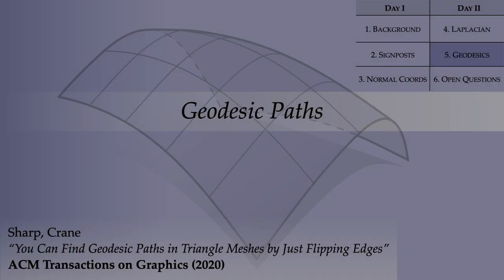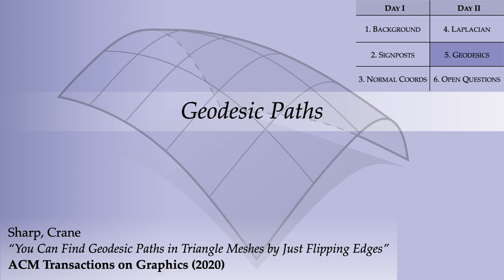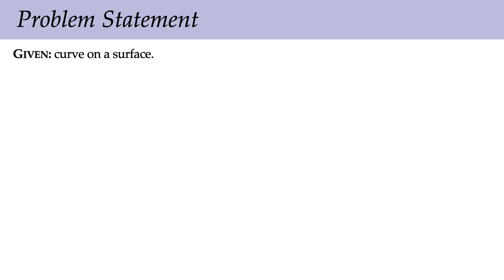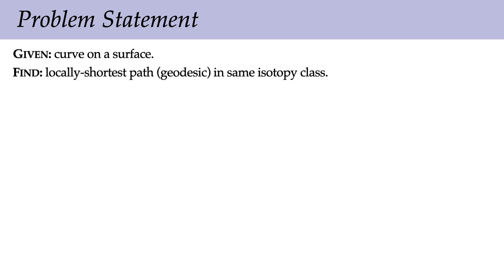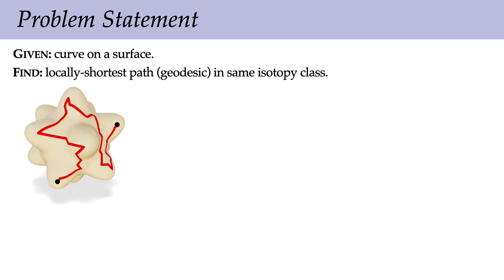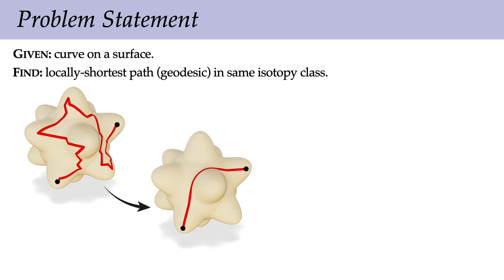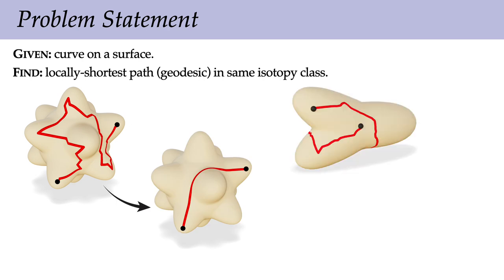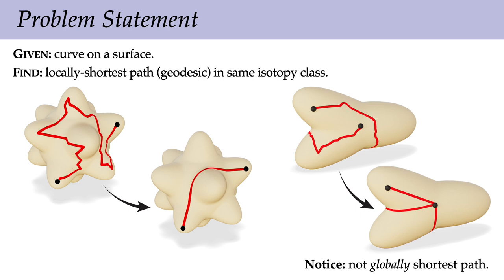Let's now talk about a different task — computing geodesic paths — which is again joint work with Nick Sharp. The problem is: you're given a curve on a surface and you want to find a locally shortest path or geodesic in the same isotopy class. For instance, we want to start with one curve and straighten it out, or start with another curve and straighten it out. One thing to notice is that just because you can't make a curve any shorter locally does not mean that it's the globally shortest path, which would just directly connect the two marked points.